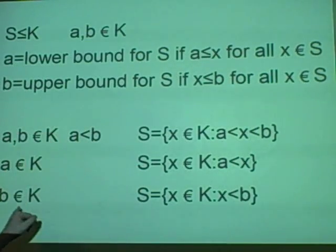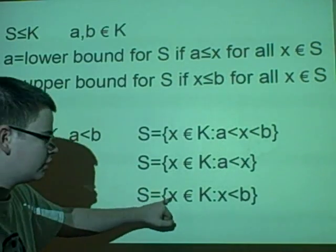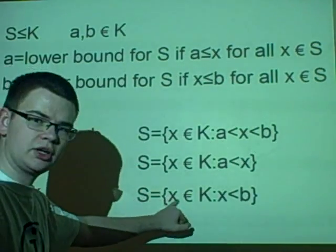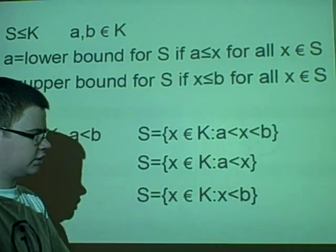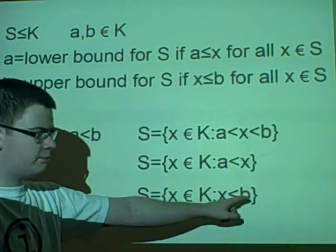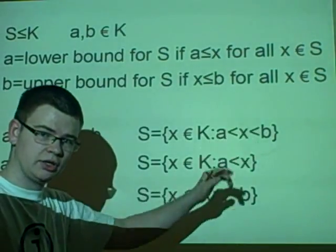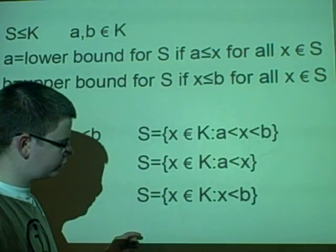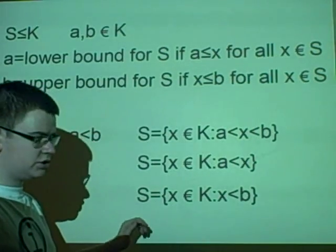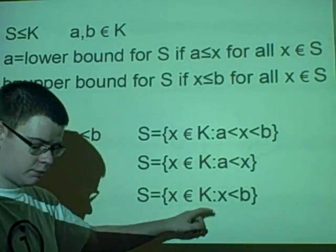Similarly, we have B as an element of K, where all elements are less than B. From this we can tell that B or anything greater is the upper bound. But this is not bounded because it does not have a lower bound.